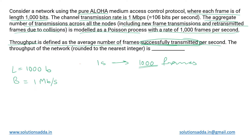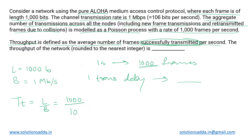In one second we are generating 1000 frames, so we need to find out how many frames are transmitted in one transmission time, i.e., one unit of transmission delay. For that, we first find the transmission time — the time it takes to transmit one frame — which is given as the length of frame divided by bandwidth. That is 1000 bits divided by 10^6 bits per second, which gives 1/1000 seconds, or 1 millisecond.